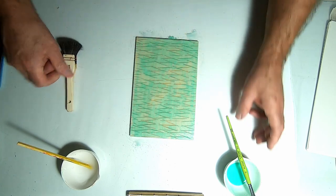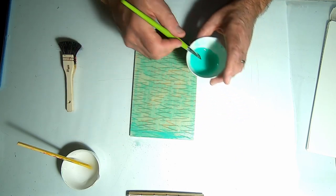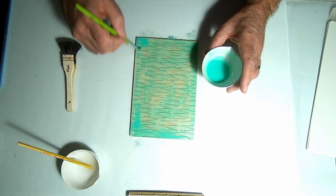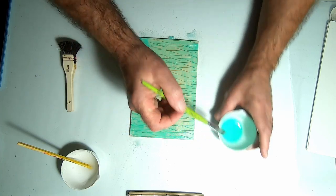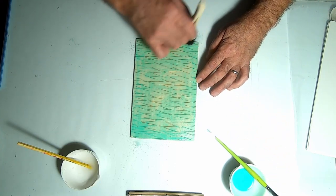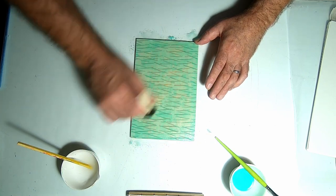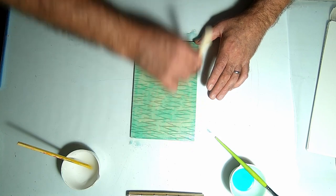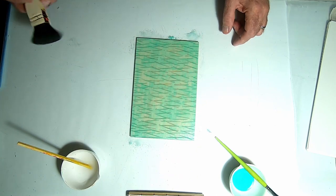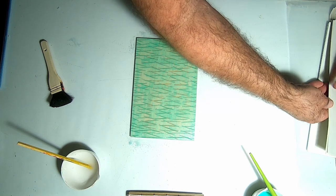I did pre-soak this block with water so the absorption wouldn't be as drastic as it could be, but it's still absorbing quite a lot of this color that I'm applying to it. So we've got a layer on there and we'll take the first impression off that.